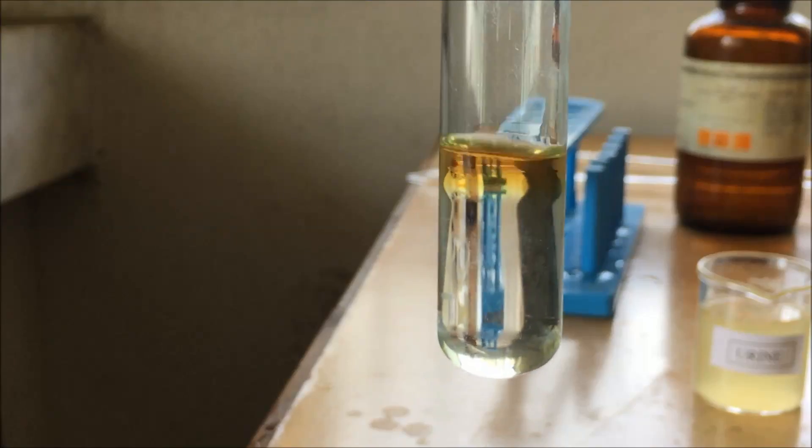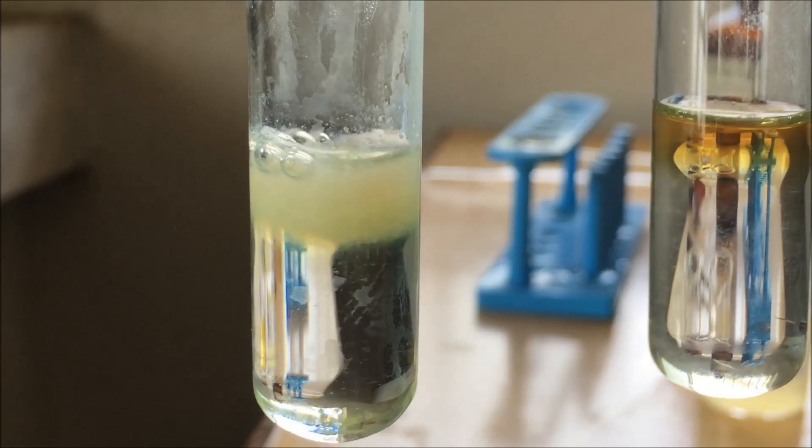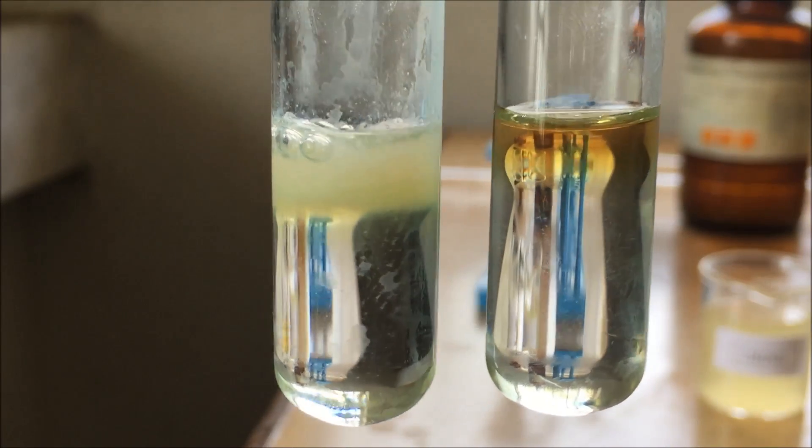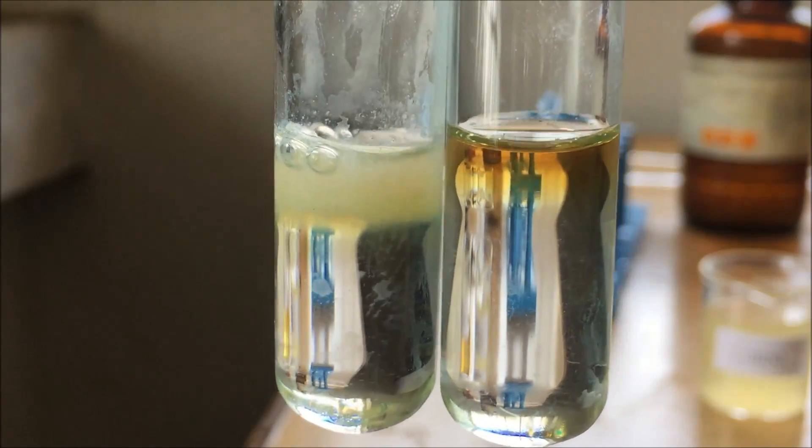Let us compare these two, the previous one and the present one. This was with a real urine sample and this is a dummy urine sample. It has a white precipitate ring.